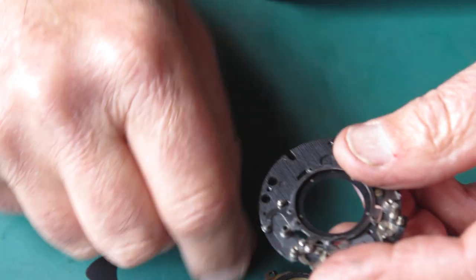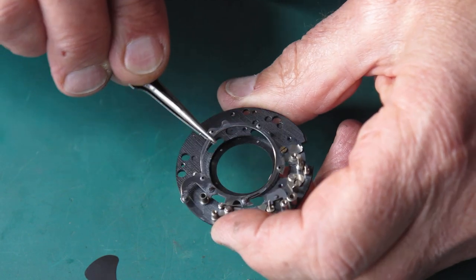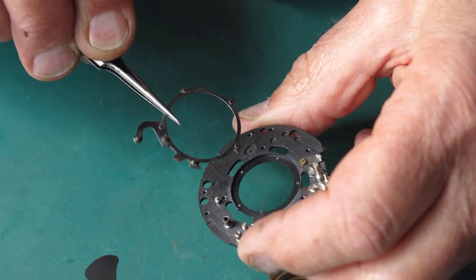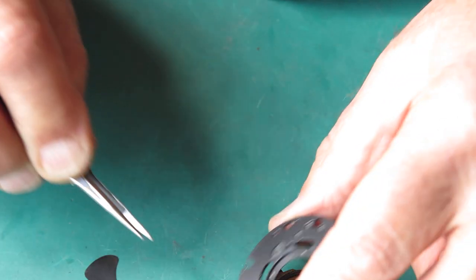Put that to one side. Here's the blade actuating ring. Unhook that. It all looks neat and tidy.